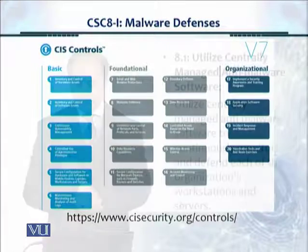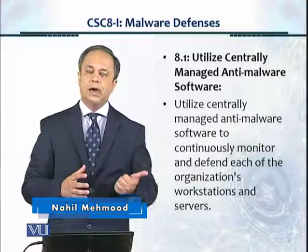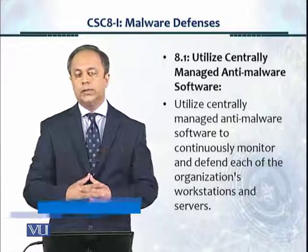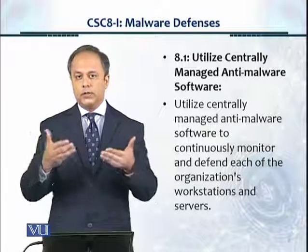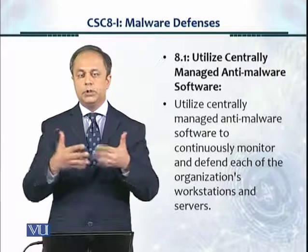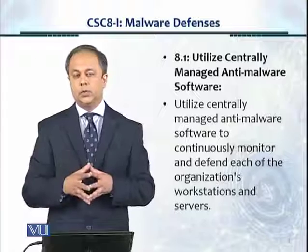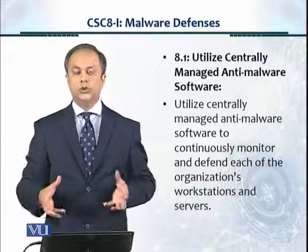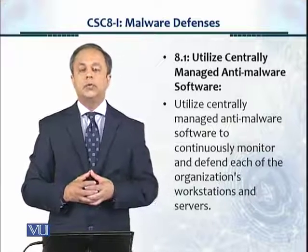Control 8.1 tells us to utilize centrally managed anti-malware software. This could be an antivirus or other types of anti-malware software. Network malware protection is also available at the edge, so that the Next Generation Firewall has certain features — for example, anti-virus protection, anti-malware protection, and also email anti-spam protection and web filtering protection. This is all bundled together in the Next Generation Firewall available at the edge. Inside the organization, you can also implement anti-malware solutions on the desktops and servers through antivirus.